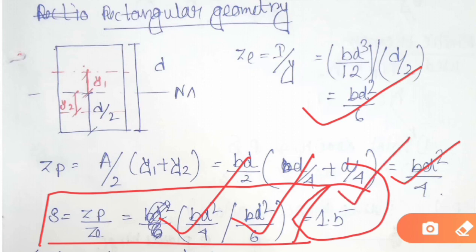The shape factor for various kinds of geometry will be different — for example, T-section, solid circular section, and hollow circular section all have different values — because shape factor is totally dependent upon the geometry. In due course of time I will discuss about other types of geometry and their shape factors.